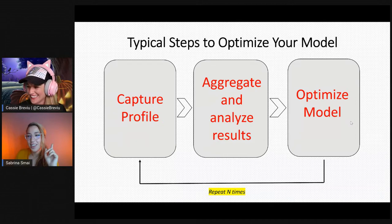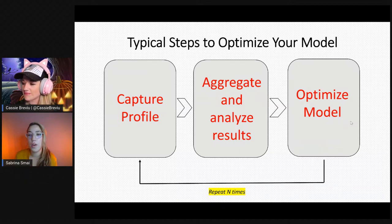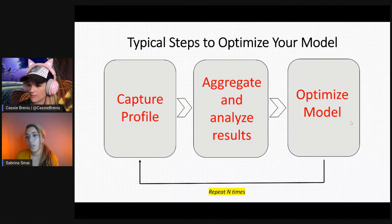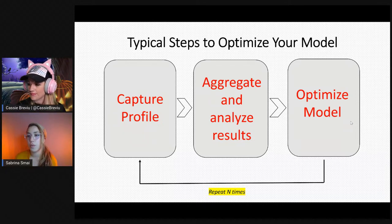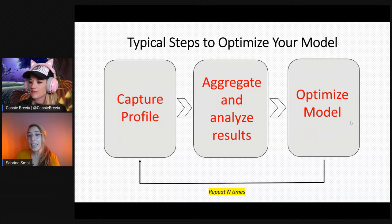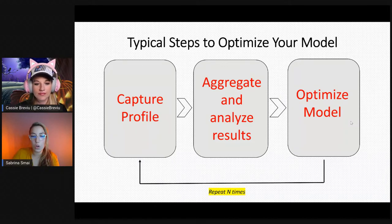But if performance is not satisfactory, you have to go back to step one, recapture a profile, gather the data, find the bottleneck, fix it, and try all over again — N number of times until performance is satisfactory. This is the typical day of a performance engineer. Here at Microsoft, we partnered with Facebook to bring performance engineers, data scientists, and framework engineers a tool that automatically processes your traces, analyzes them, and provides automated performance guidance to optimize your model. That tool is called PyTorch Profiler.